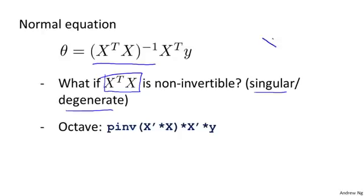The issue or problem of X transpose X being non-invertible should happen pretty rarely. And in Octave, if you implement this to compute theta, it turns out that this will actually do the right thing. I'm getting a little technical now and I don't want to go into the details, but Octave has two functions for inverting matrices. One is called pinv and the other is called inv.